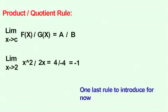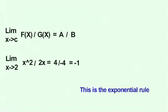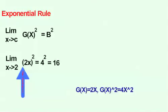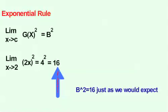One last rule to introduce for now. This is the exponential rule. If g of x is raised to an exponent, then its limit is also raised to the same exponent. g of x equals 2x, and g of x squared equals 4x squared. b squared equals 16, just as we would expect.